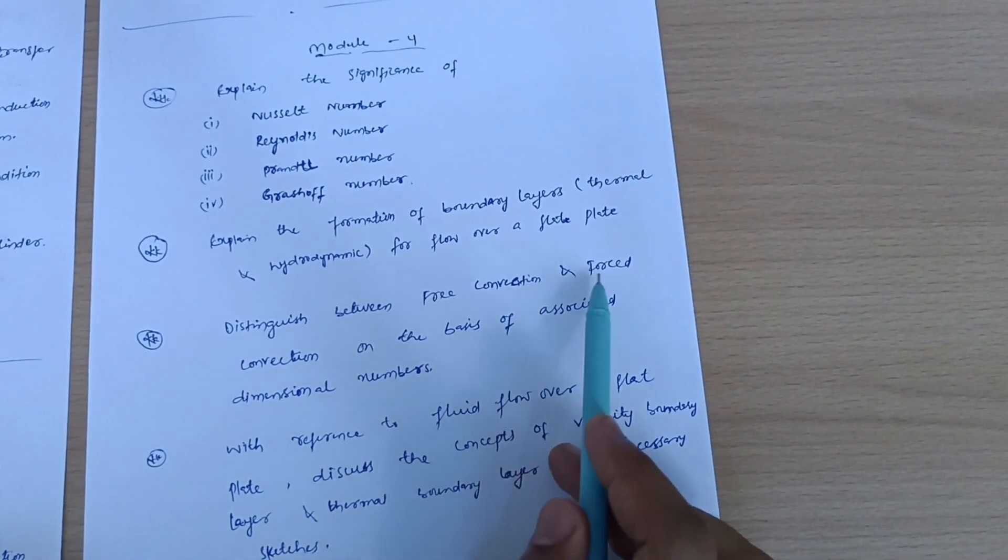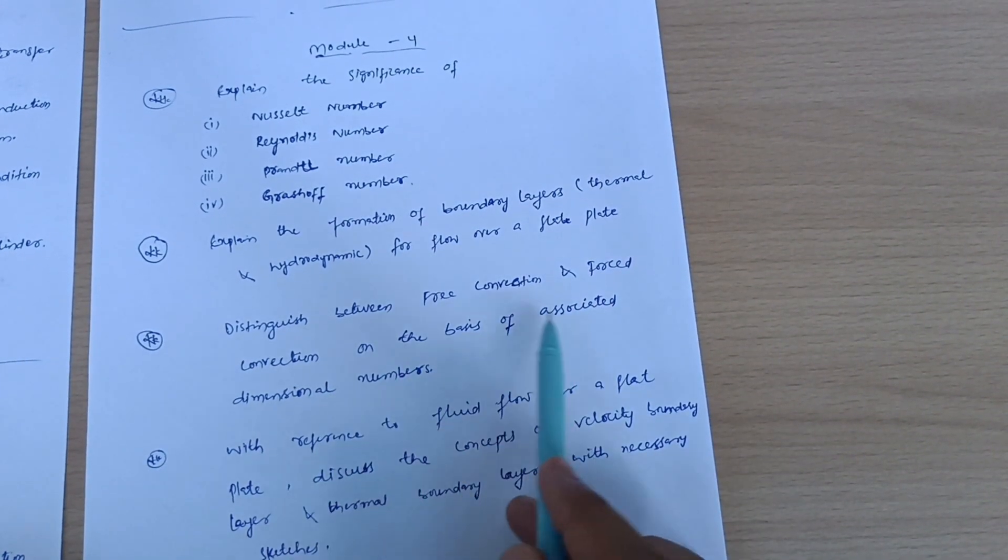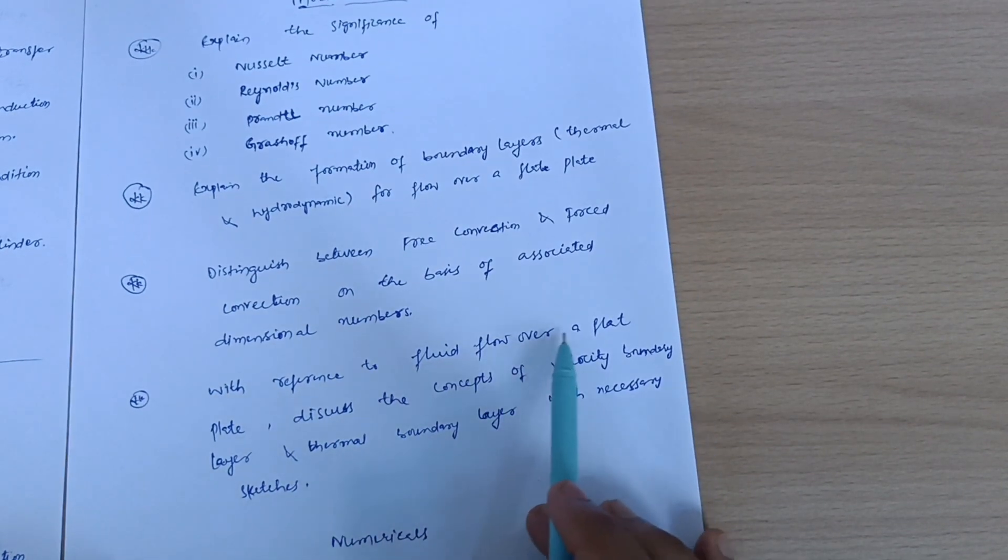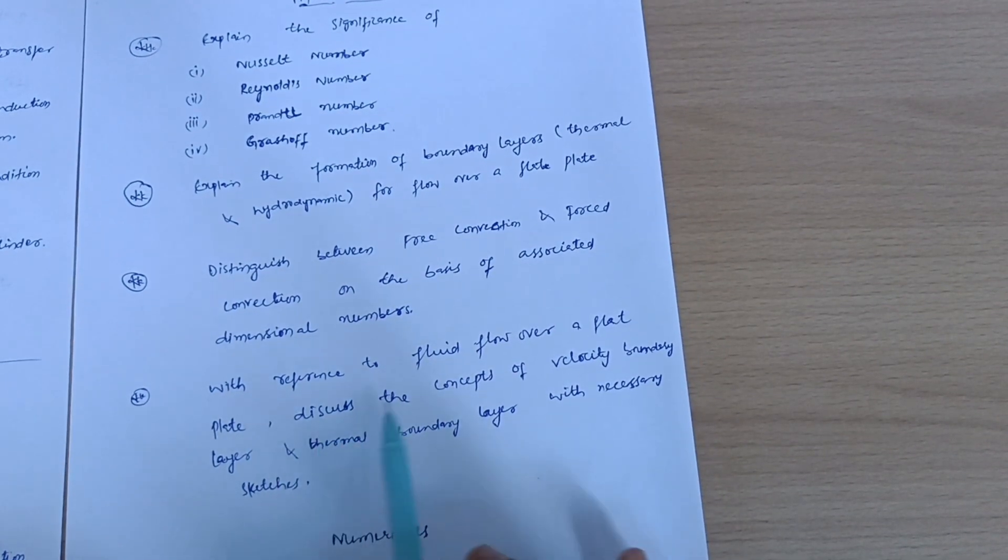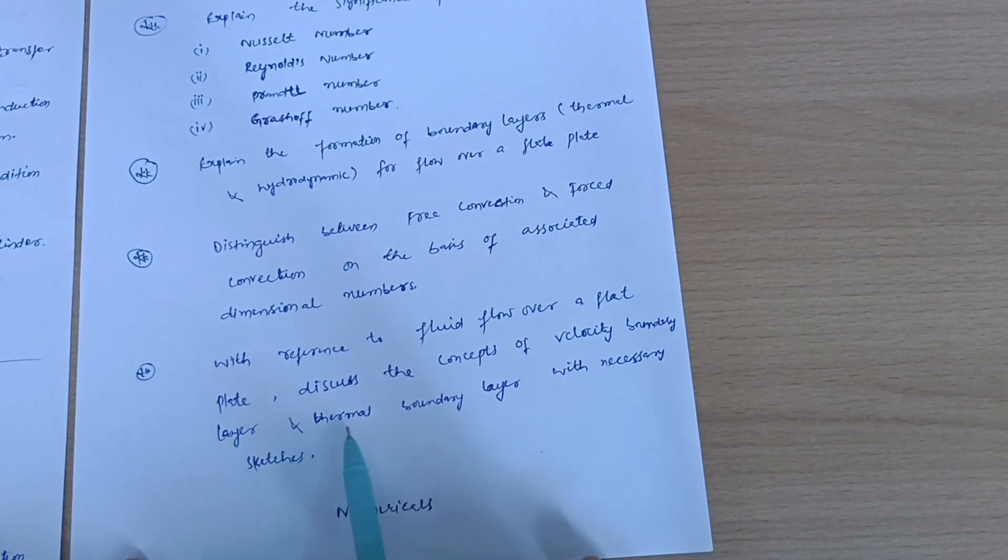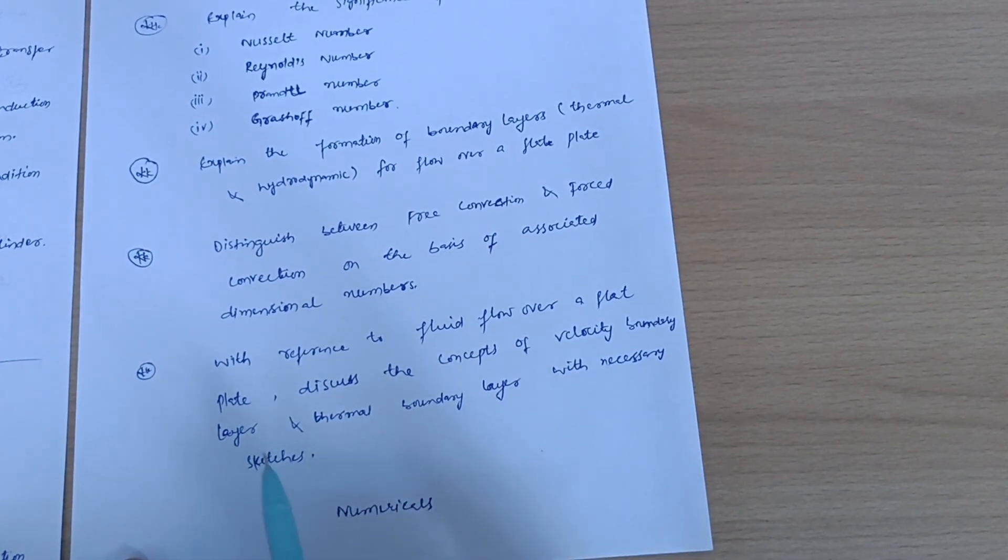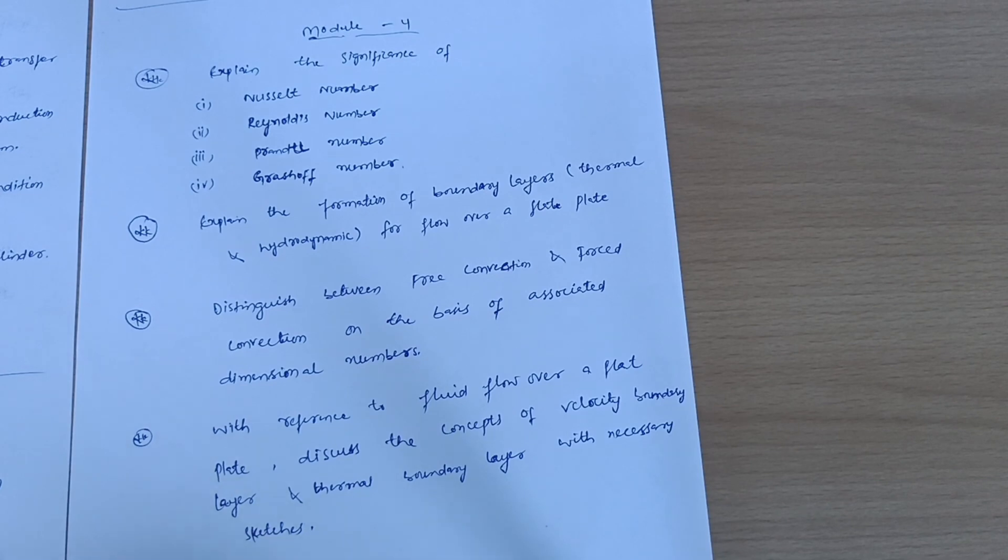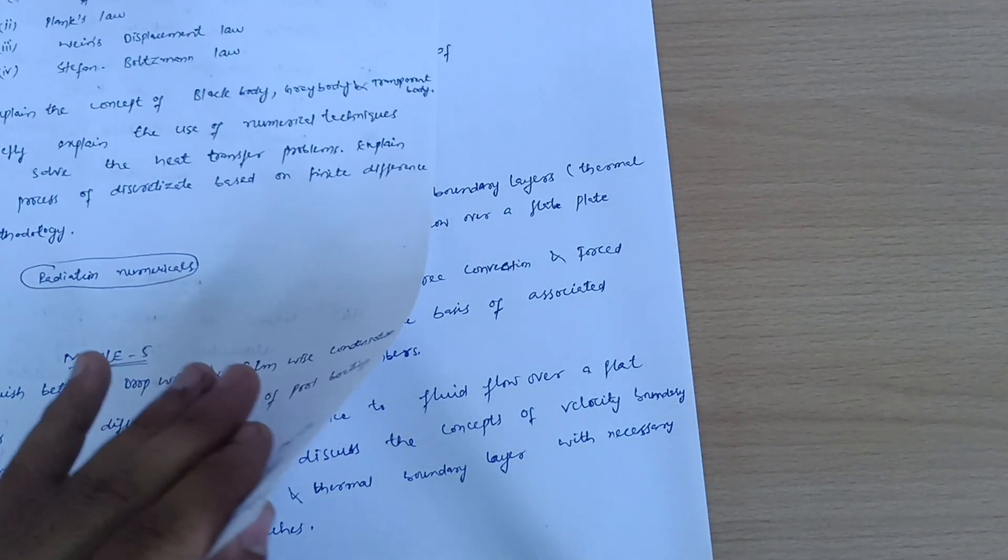Distinguish between free convection and forced convection on the basis of associated dimensional numbers. With reference to fluid flow over a flat plate, discuss the concepts of velocity boundary layer and thermal boundary layer with necessary sketches. These are all theoretical questions which I have discussed here.